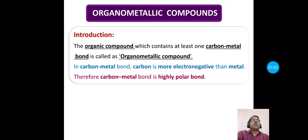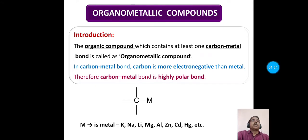This carbon-metal bond is a highly polar bond, due to the greater electronegativity of carbon than metal. It can be represented as C–M, where C is carbon and M is metal. That metal may be potassium, sodium, lithium, magnesium, aluminum, zinc, cadmium, mercury, etc.